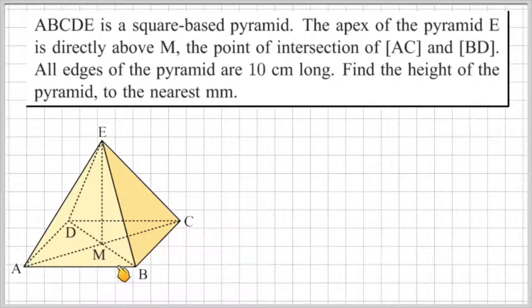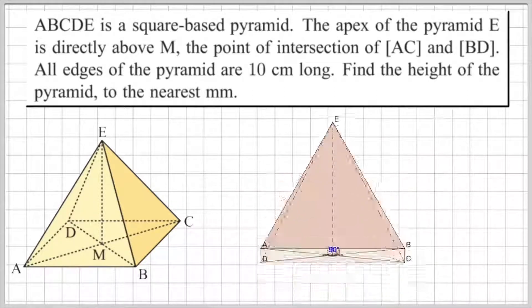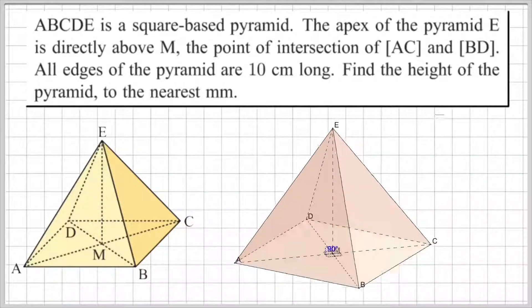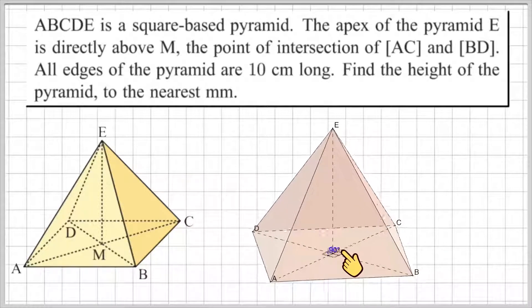Remember, the diagonals of a square intersect at 90 degrees. And since E is directly above the midpoint, it stands perpendicular to the base, which means that is also at 90 degrees. You can see in the rotating image that if I flip it to the bottom, you can see a set of 90 degree angles. And if I bring it back to the side view, you can see as it's rotating that EM is perpendicular to the base. It's at 90 degrees.